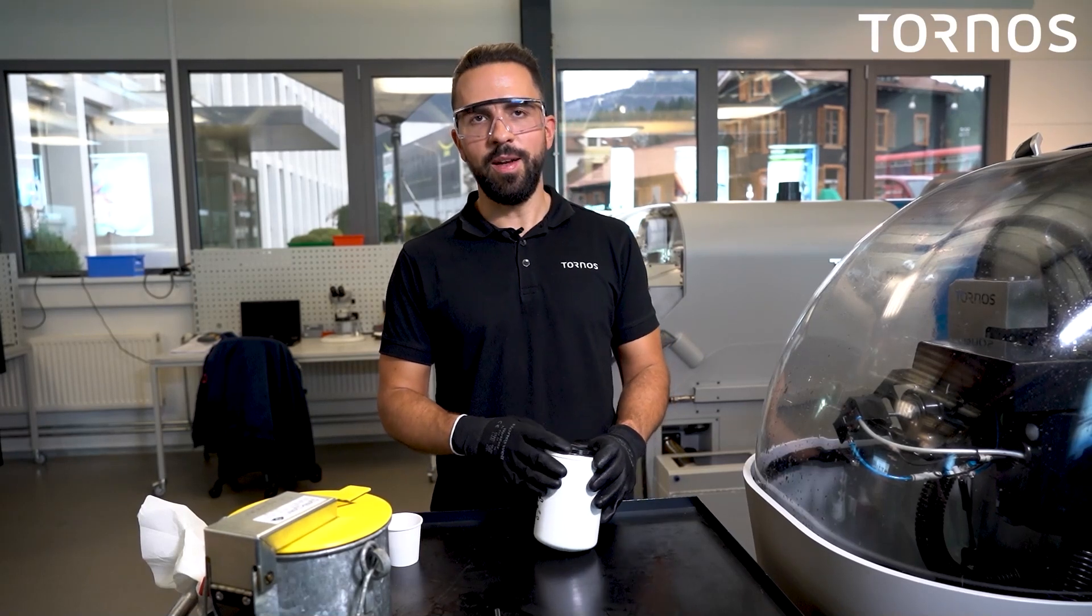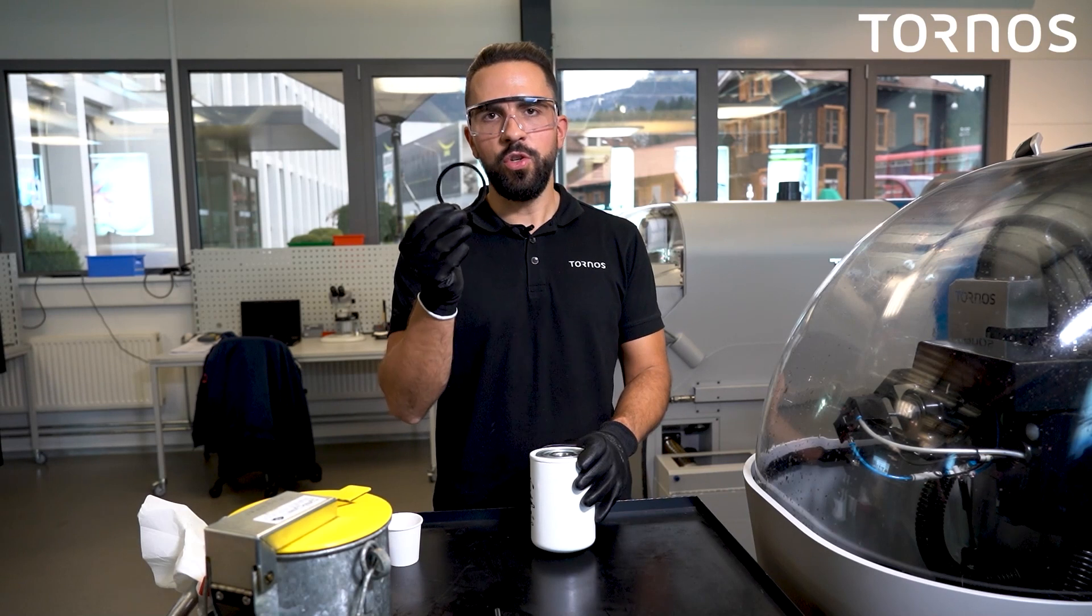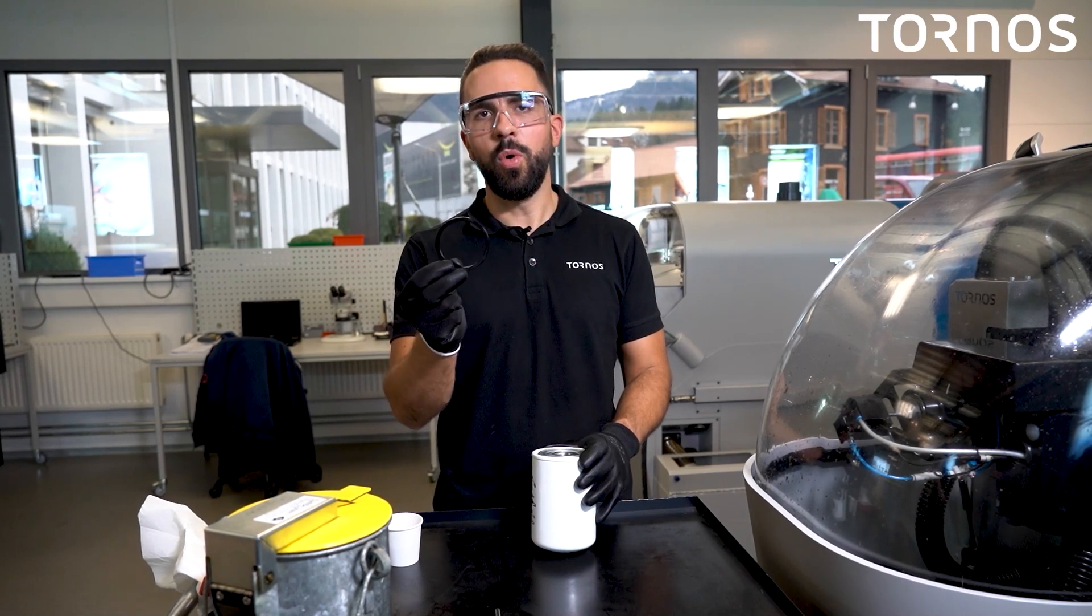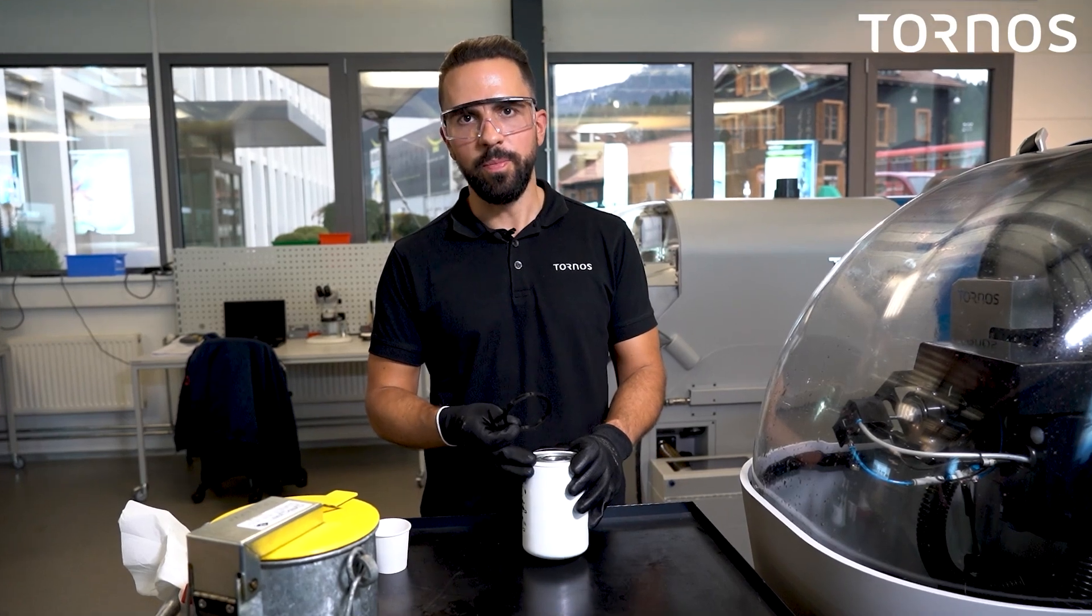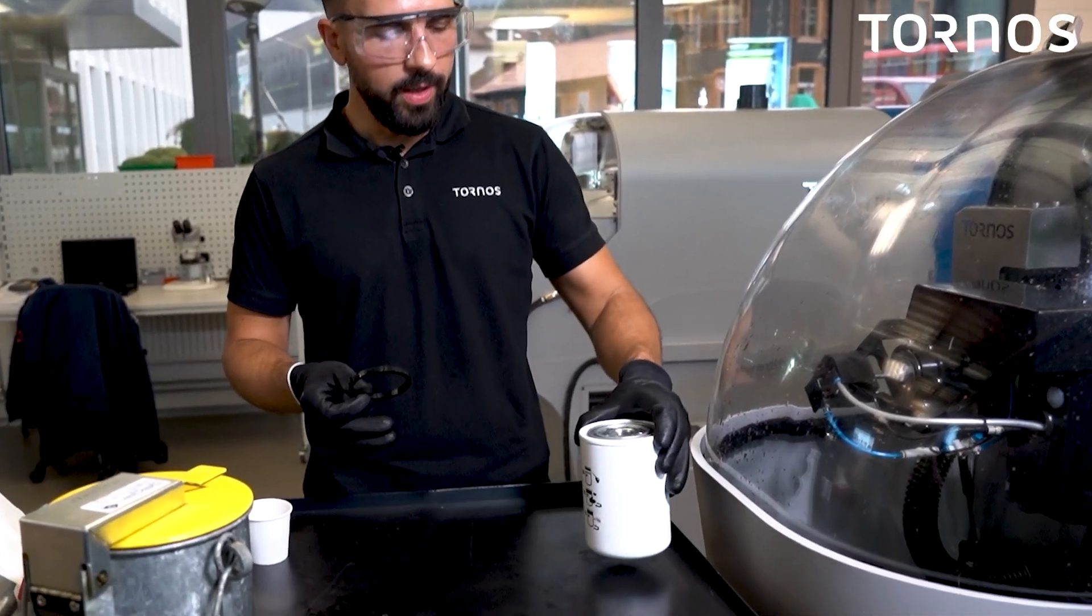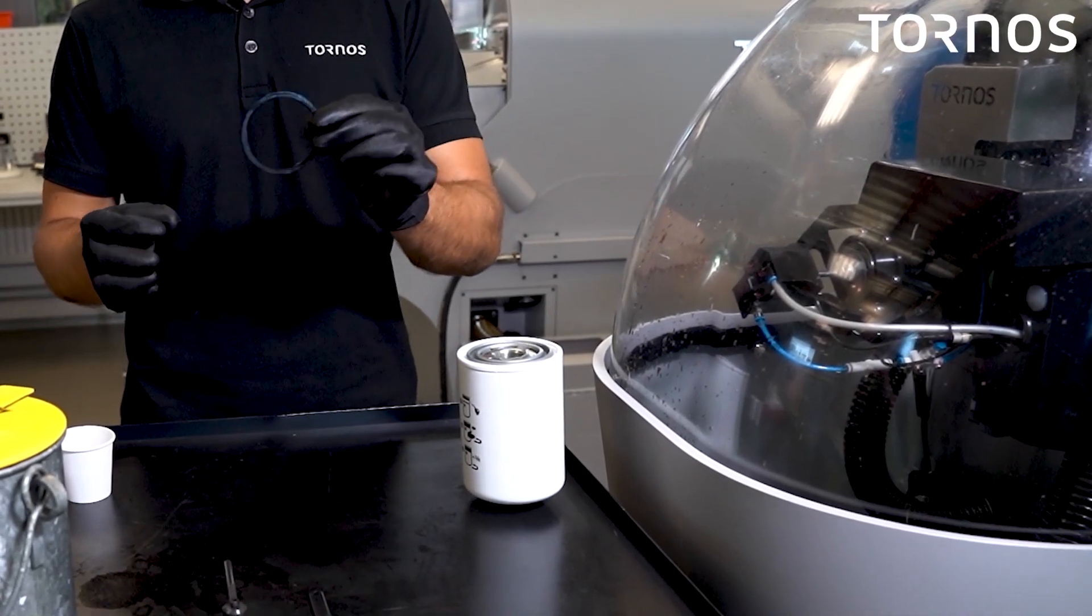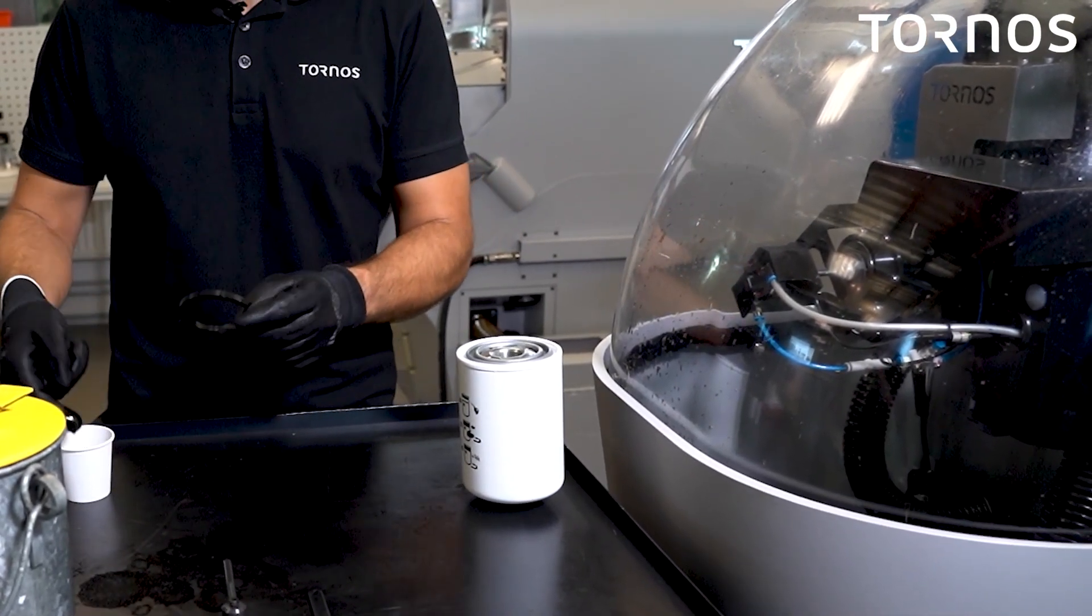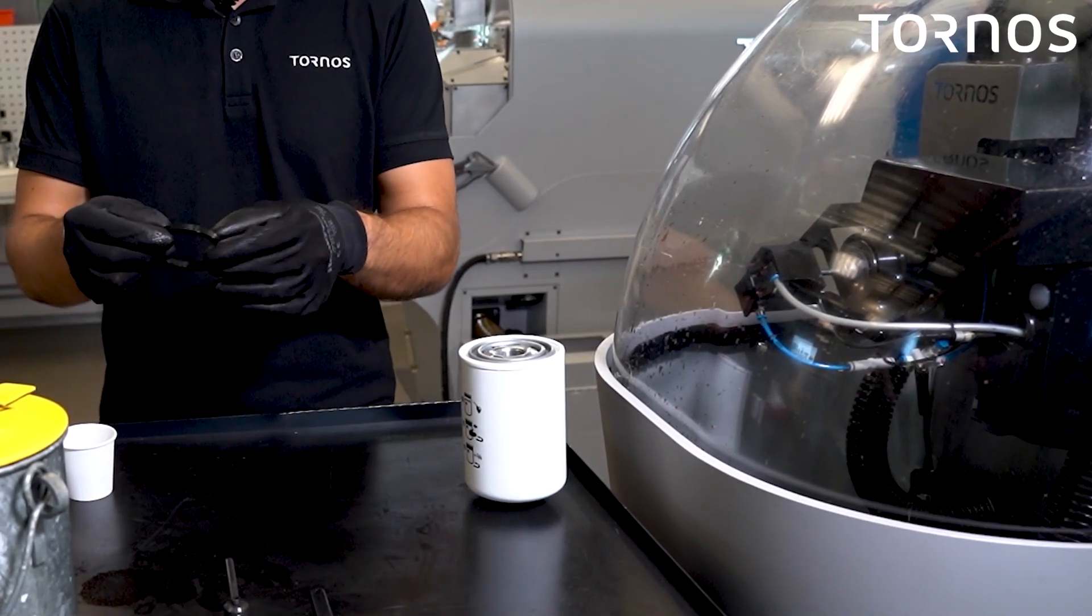Before you reinstall this filter in the machine, make sure this o-ring is not anymore seated on the support of the filter. Use cutting oil or grease to lubricate the o-ring before installing it on the oil filter. This will provide you an optimum sealing when you reinstall the oil filter inside the machine.